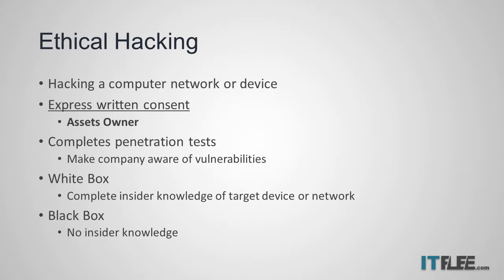There are different types of penetration tests that can be completed against a target. For example, a white-box penetration test is when ethical hackers have been provided with all available information about the subject they are testing. This information could include network diagrams, software source code, hardware components, or anything else that is related to the target.